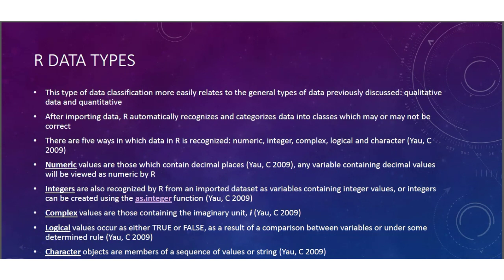Numeric values are those which contain decimal places. Any variable containing decimal values will be viewed as numeric by R. Integers are also recognized by R from an imported data set as variables containing integer values, or integers can be created using the as.integer function. Complex values are those containing the imaginary unit.